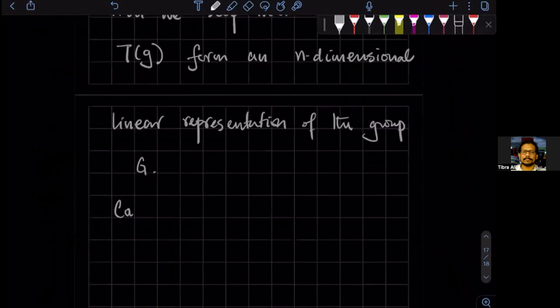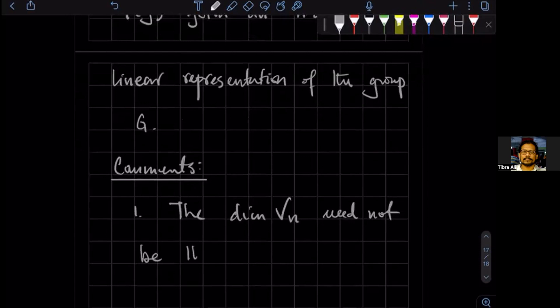Let me make a couple of comments. Comment number one is that the dimension of Vn need not be - let me rephrase that because need not means something is natural. The dimension of Vn is not, in general, the dimension of G.